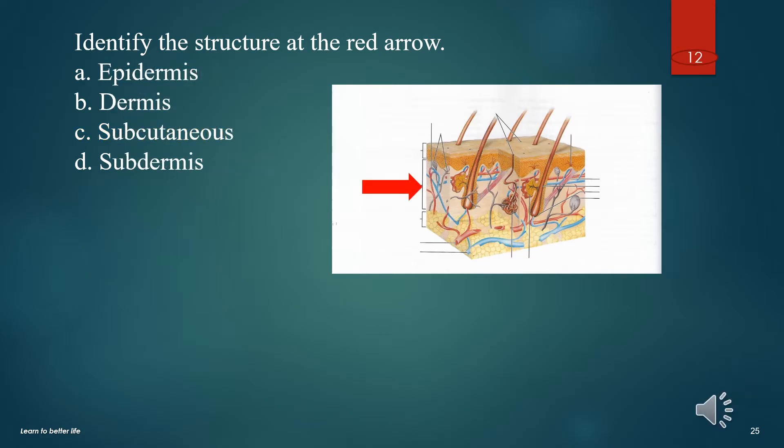Identify the structure at the red arrow. A. Epidermis. B. Dermis. C. Subcutaneous. D. Subdermis. The answer is B. Dermis.